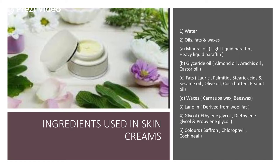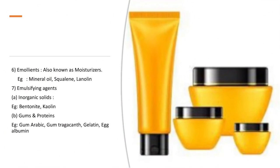Different creams are of different colors, and these colors are imparted using natural or synthetic colors such as saffron, chlorophyll, and carmine. Emollients are another key constituent — they provide moisturization, penetrate into the skin, and enhance skin hydration levels. Examples include mineral oils, kaolin, and lanolin derivatives. Emulsifying agents can be inorganic solids like bentonite and kaolin, or gums and proteins like gum arabic, gum tragacanth, gelatin, and sometimes albumin.